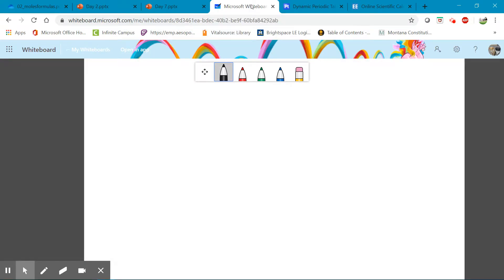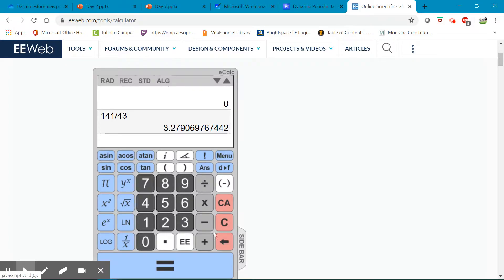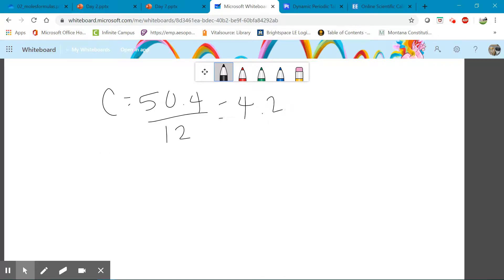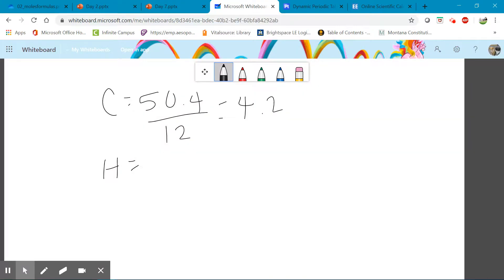So looking at carbon, we have 50.4% carbon and carbon's molar mass is 12 grams per mole. And so we would take 50.4 divided by 12 and that gives me a value of 4.2. Then we would take hydrogen, which is 15.2% divided by the molar mass, which is 1, and then that's 15.2.